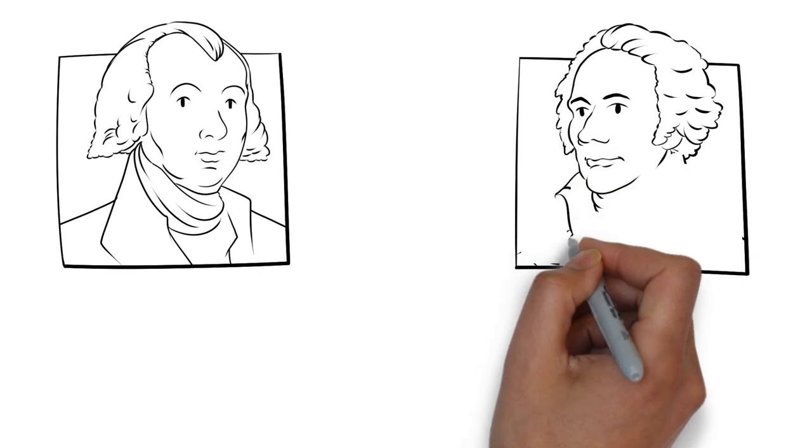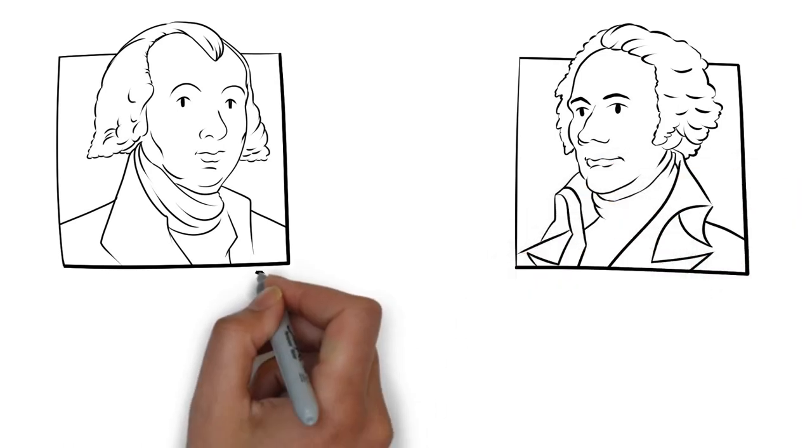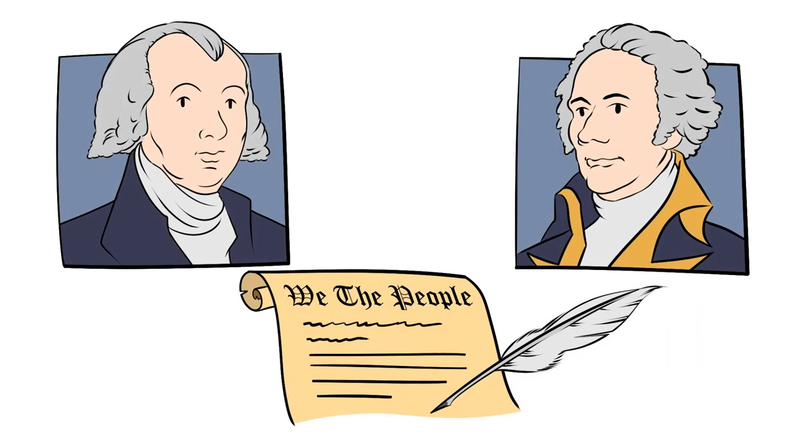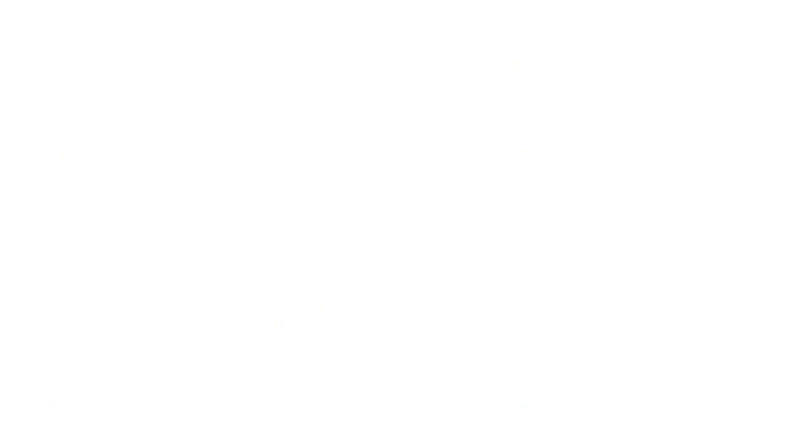But Alexander Hamilton's Federalists were more afraid of insurrection. The new constitution struck a compromise. Congress could raise and fund an army for two years.